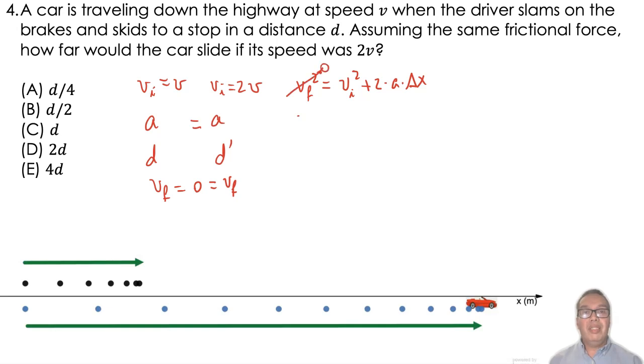This means that your acceleration is given by the expression negative b squared over 2d.